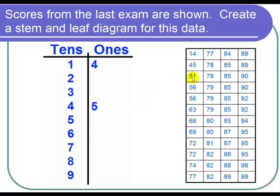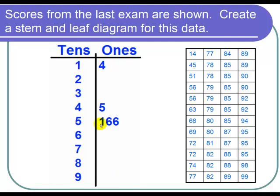Okay now let's look at the 50s. We have a 51, 56, and 56. So the ones digits corresponding to 50s are 1, 6, and 6. So I write down the numbers 1, 6, and 6 next to the 5 in the tens digit.